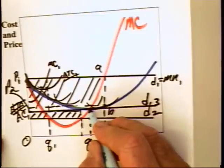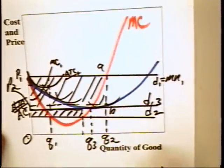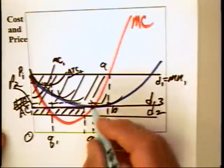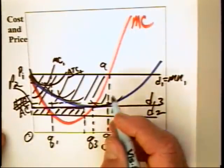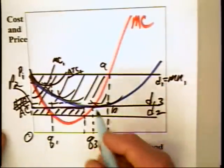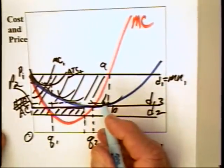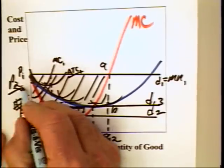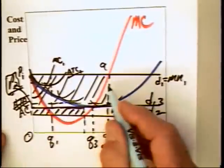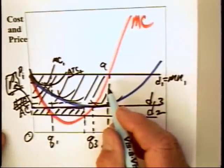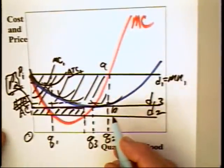Now, notice the price is equal to the average cost at that point, which means that the firm will be making only normal profits. It will only be covering its cost, assuming normal profit is a part of the cost structure. The moral of the story is that if the price is above P2, then there's going to be profit to be made in the long run. And the firms will be moving into the market.